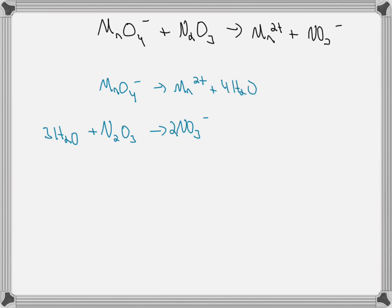That then introduced eight hydrogens. So in acidic solution, we balance the hydrogens with hydrogen ions. We have six hydrogens and no hydrogens, so we'll add six hydrogen ions.